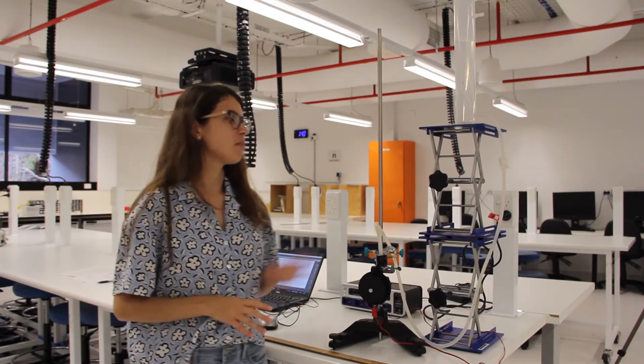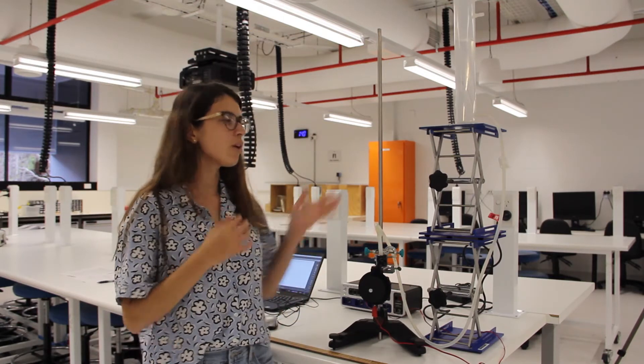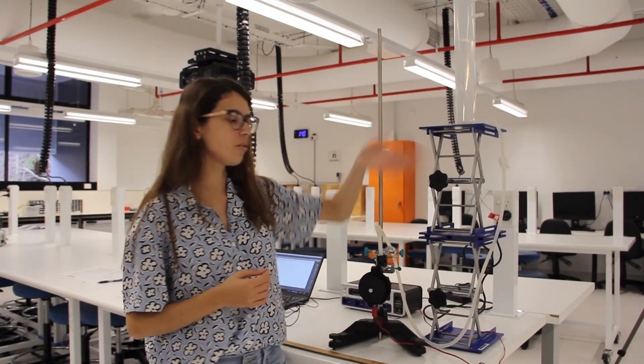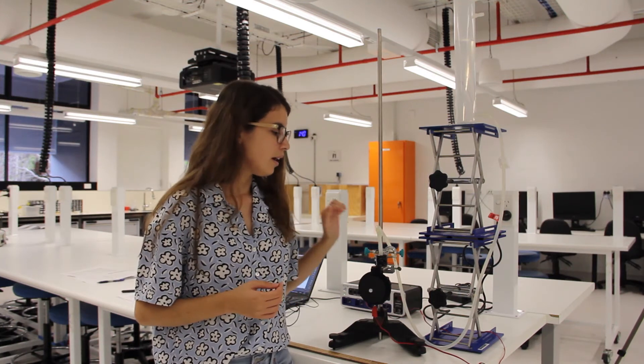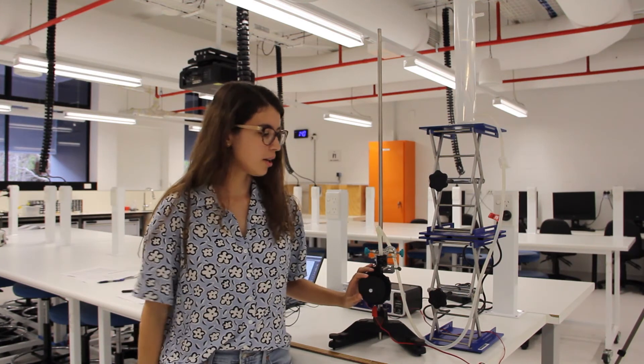The equipment we have for this experiment is shown in here. We have a measuring cylinder with water inside. The water will flow through a nozzle, this one, and it will fall into the water turbine.